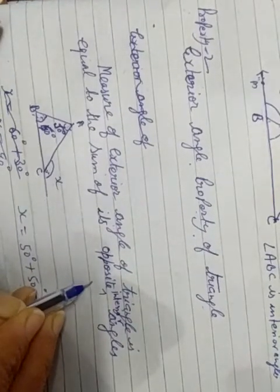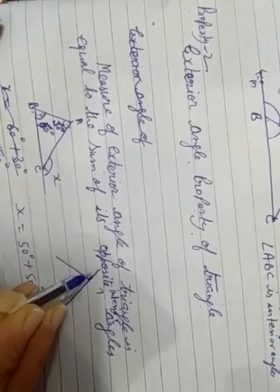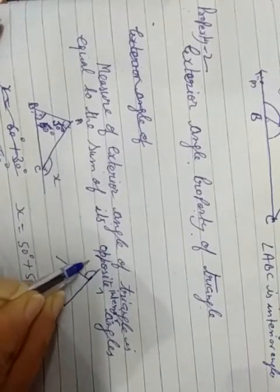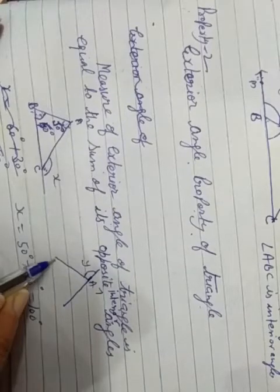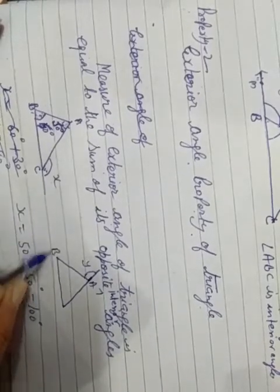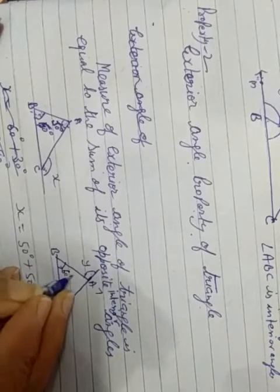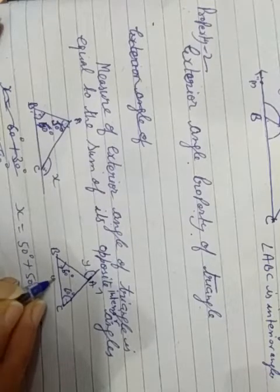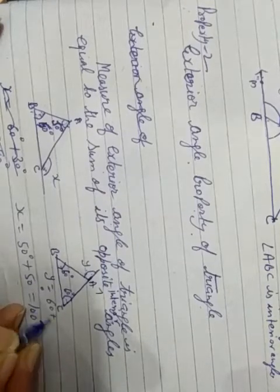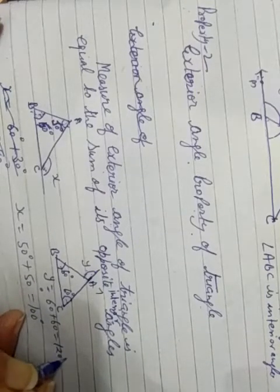Similarly, if we take another angle — let's say angle Y at point A, B, C — then the opposite angles of Y are at B and C, which are the interior angles. Suppose their values are 60 and 60, then Y is equal to 60 plus 60 degrees, which equals 120 degrees.